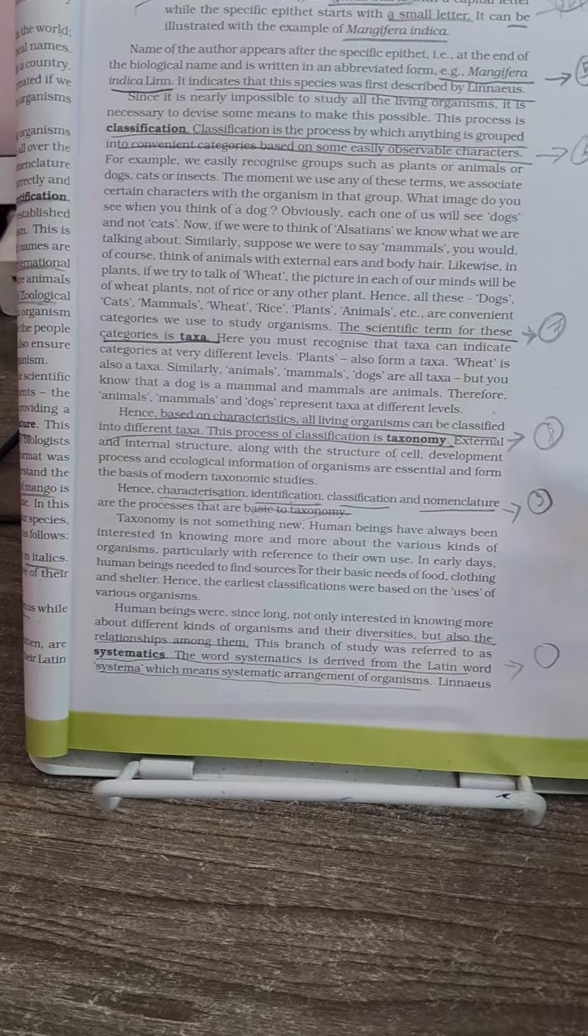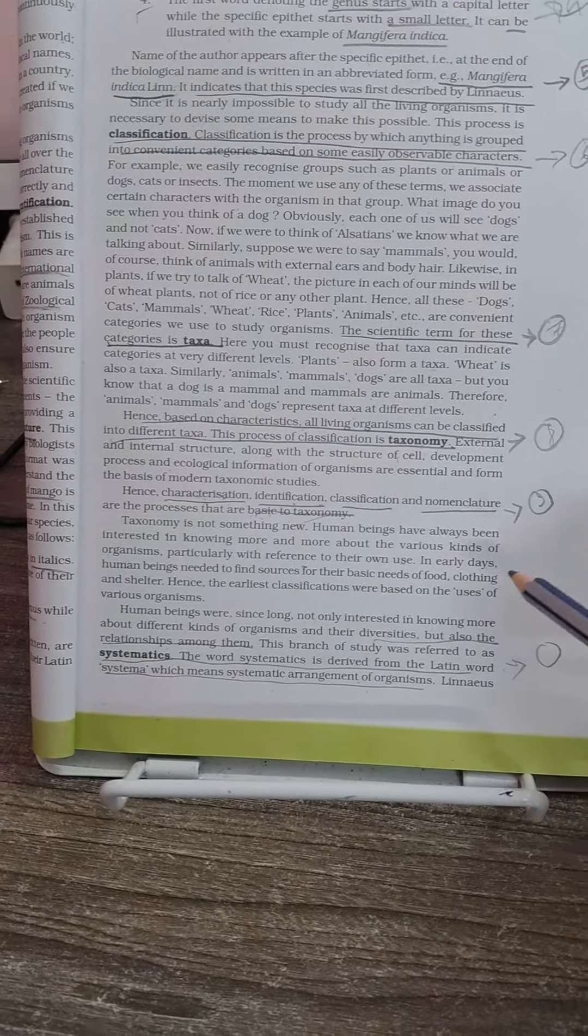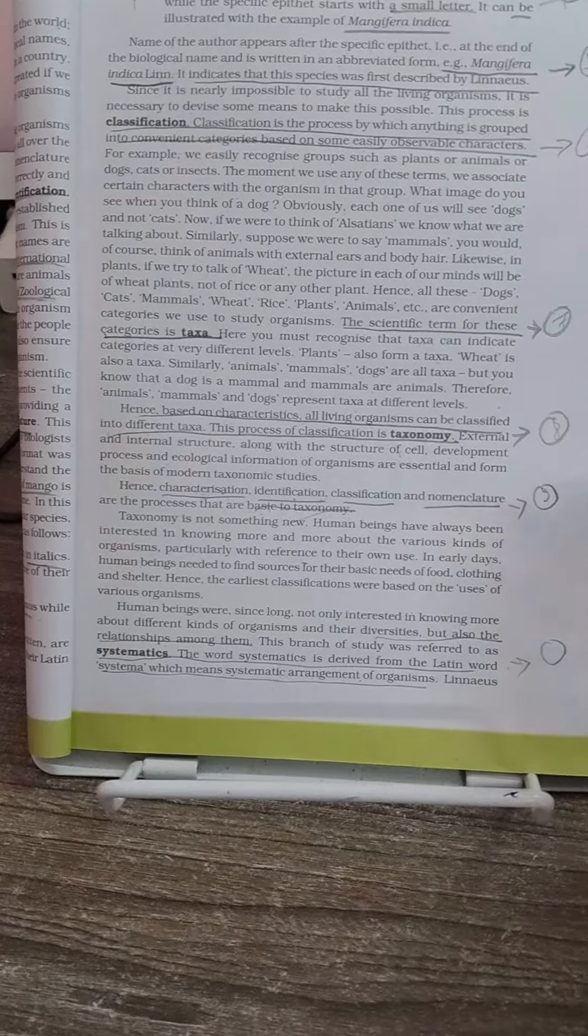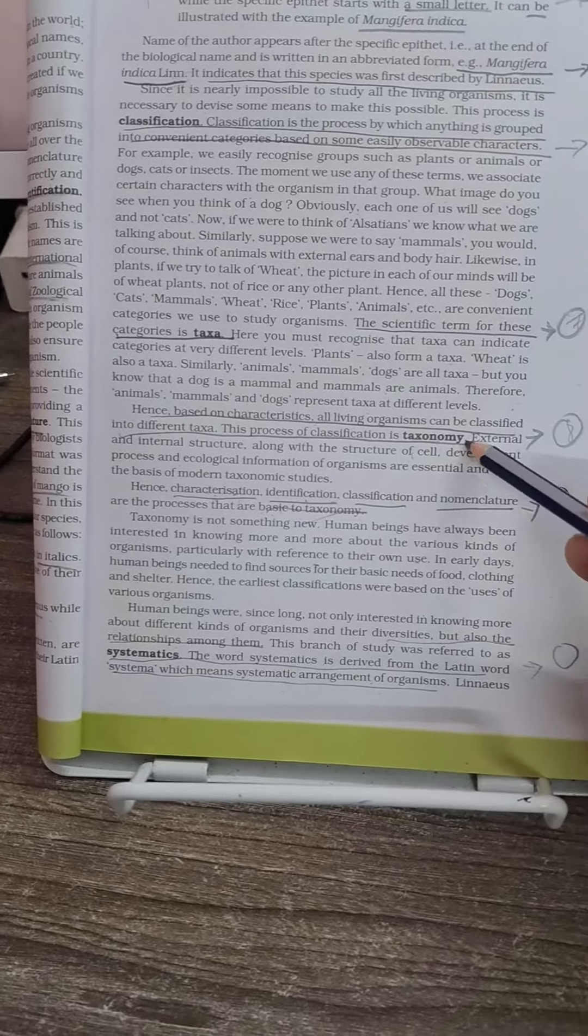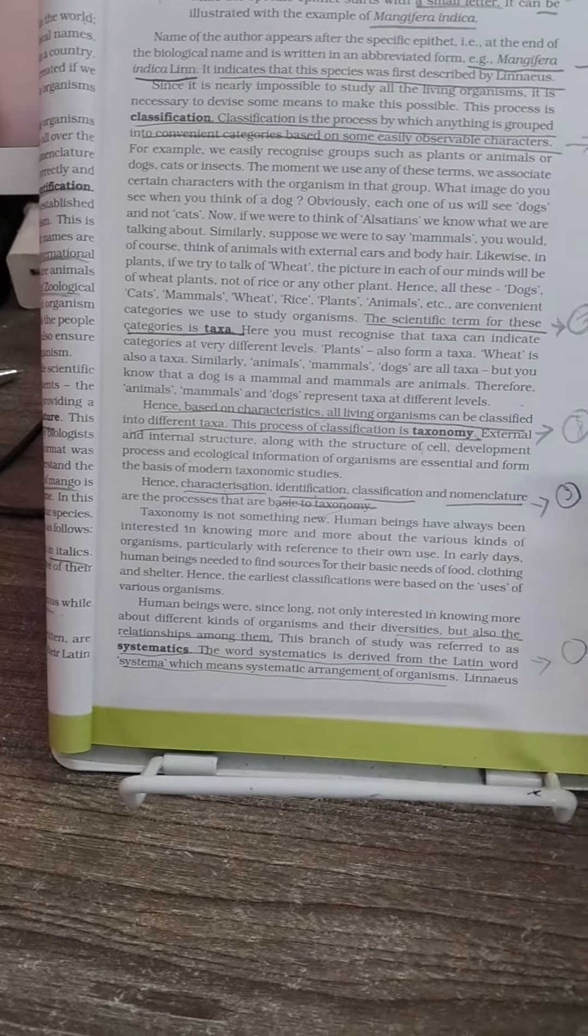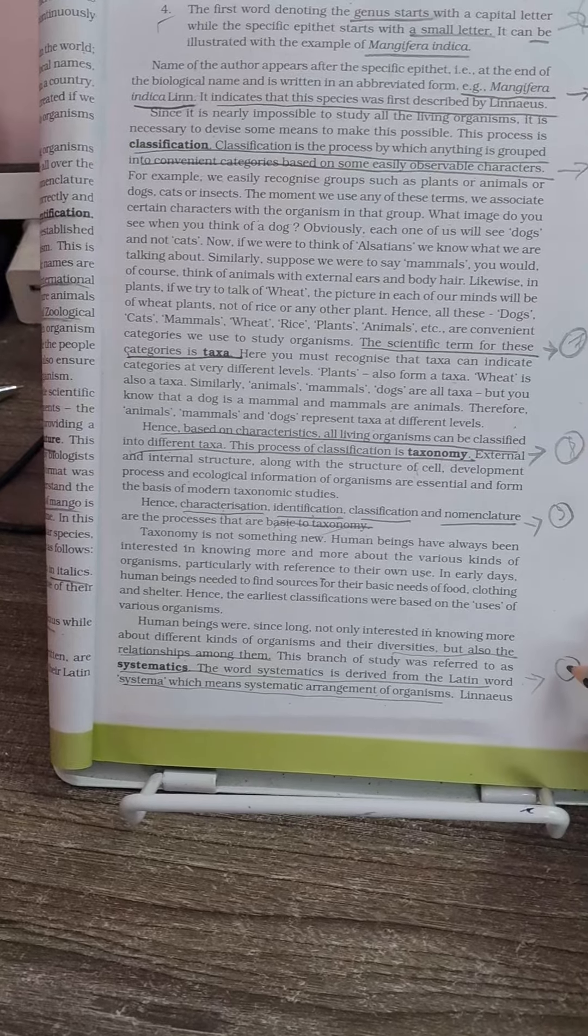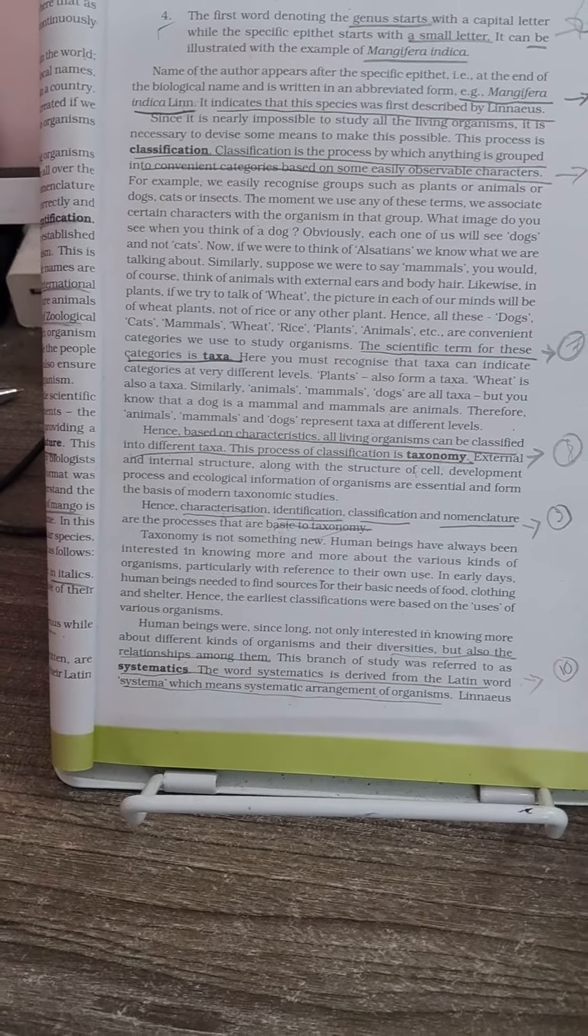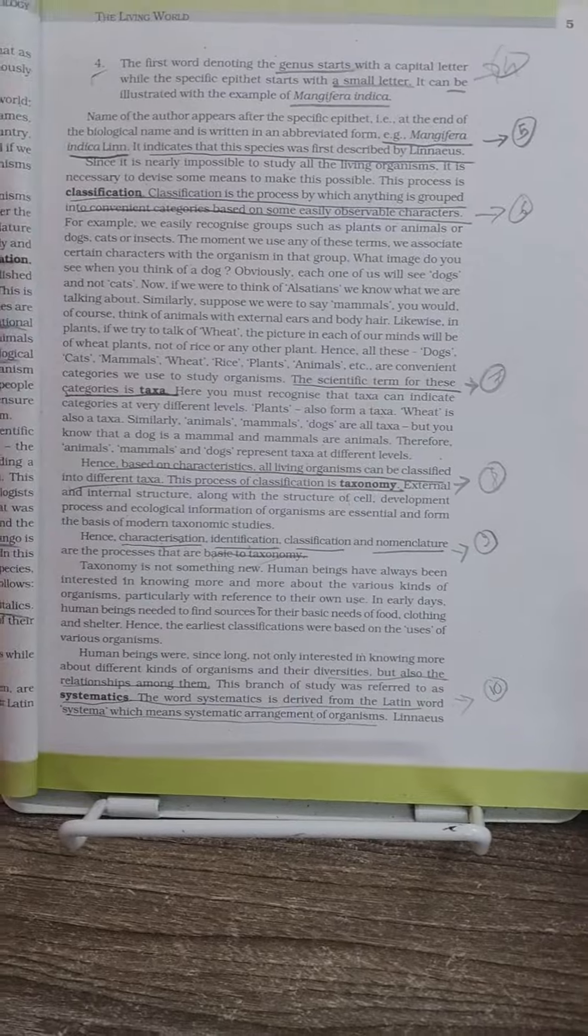Then another possible MCQ from this page is from the definition of systematics. You have to be very clear about the definition of systematics because it defines the relationship between diverse organisms and how it is different from taxonomy. This has been asked many times, so you have to be very careful answering those questions. Thank you guys. Next page will be dealt with in the next video.